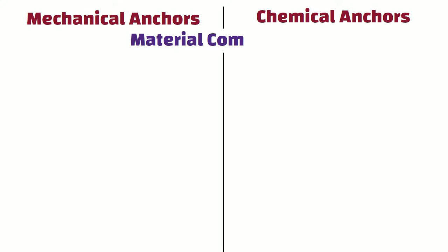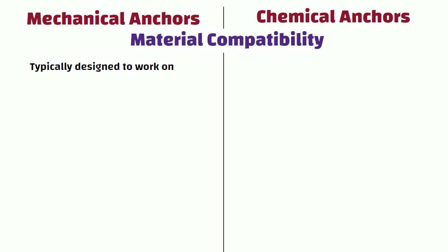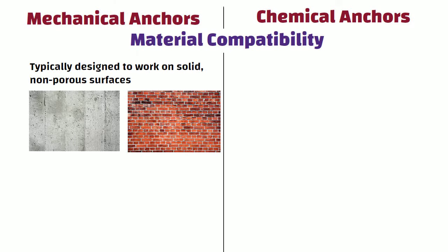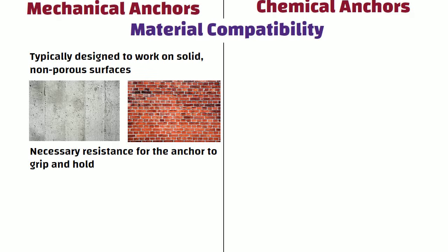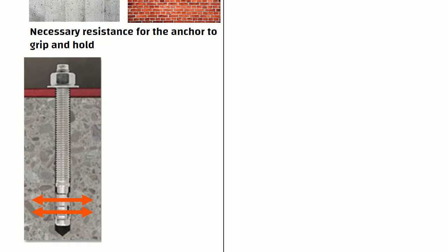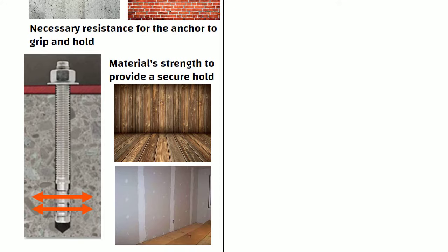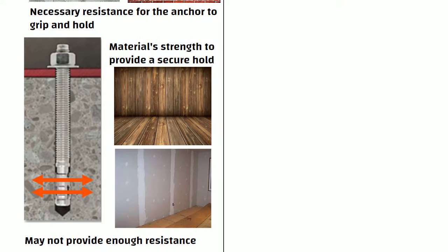Material Compatibility: Mechanical anchors are typically designed to work on solid, non-porous surfaces like concrete and brick, as these materials can provide the necessary resistance for the anchor to grip and hold. The anchor's expansion mechanism relies on the material's strength to provide a secure hold. Soft or porous materials like wood or drywall may not provide enough resistance for a mechanical anchor to work effectively.